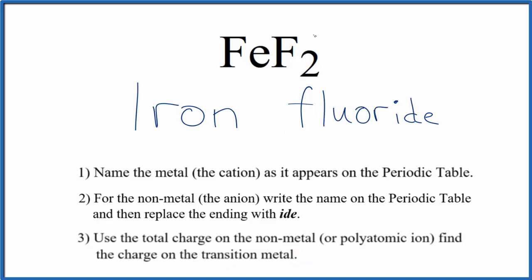So we know that fluorine is 1 minus each, and we have 2. So 2 times 1 minus, that's 2 minus. That means the Fe, the iron, is 2 plus.